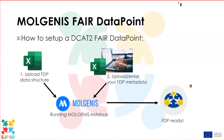Molgenis supports the DCAT2 FAIR data point. If you have a running Molgenis database, it basically takes two steps to set this up: first, upload a FAIR data point data structure; then either upload or manually enter your FAIR data point metadata. At that point Molgenis will take care of the rest and basically become a FAIR data point. That is built in.